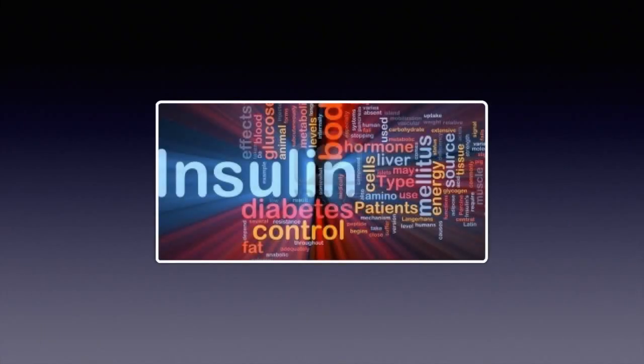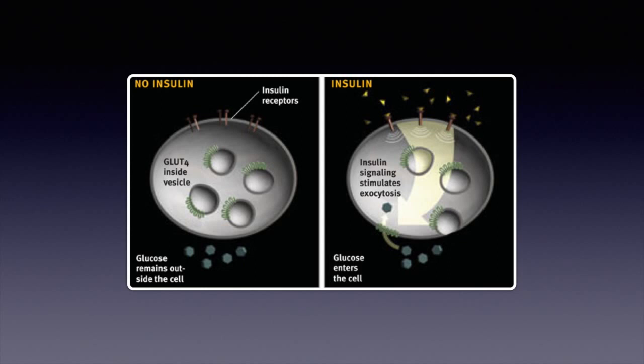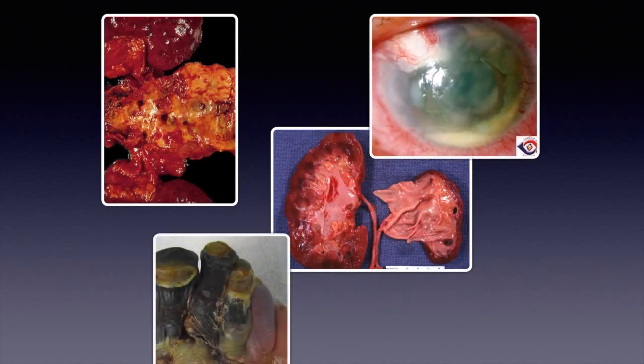Basically, diabetes is a problem with insulin — either not enough insulin is being made by the pancreas, or there is insulin being made but the receptors are not responding to it, so insulin doesn't activate the receptors on the cells. In the presence of insulin, it will bind the receptors on the cells and tell the cells that it's okay to allow glucose to enter. If there's no insulin, or if the insulin binds the receptor but doesn't activate it properly, glucose remains outside the cell. As a consequence, glucose builds up in the blood vessels and tissue, and patients develop atherosclerosis and microvascular disease, which is responsible for the morbidity and mortality of diabetes.